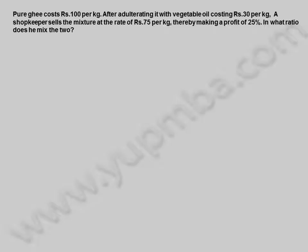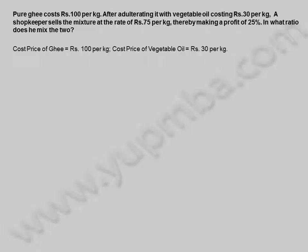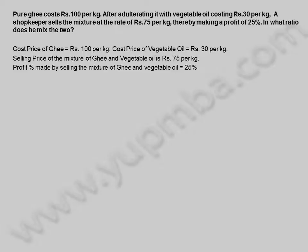Second example: Pure ghee costs 100 rupees per kilogram. After adulterating it with vegetable oil costing 30 rupees per kilogram, a shopkeeper sells the mixture at the rate of 75 rupees per kilogram, thereby making a profit of 25 percent. In what ratio does he mix the two? Cost price of ghee = 100 rupees/kg, cost price of vegetable oil = 30 rupees/kg, selling price = 75 rupees/kg, profit = 25%.